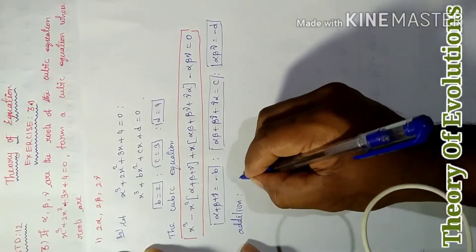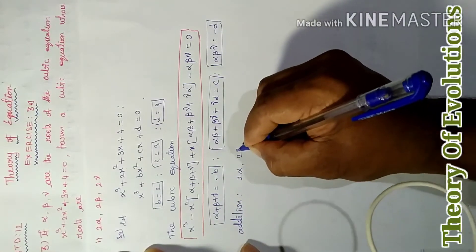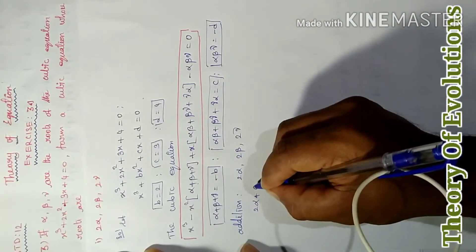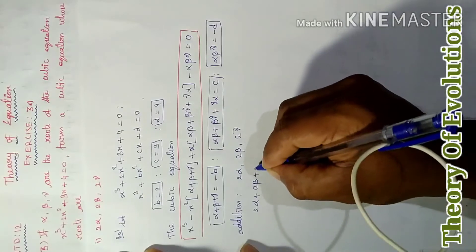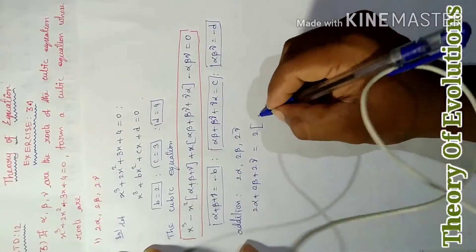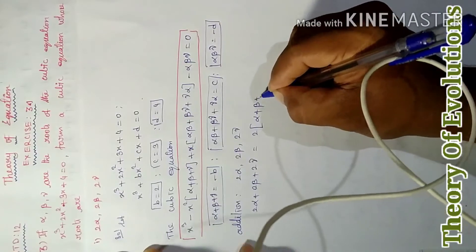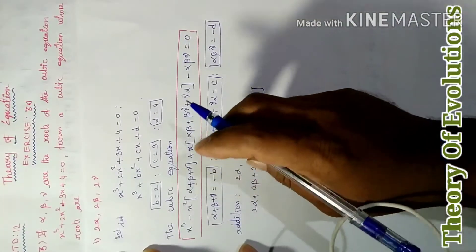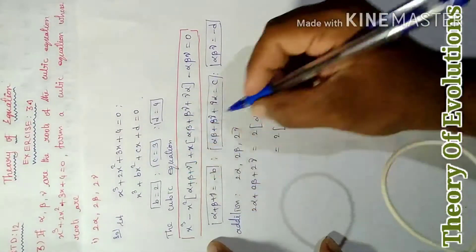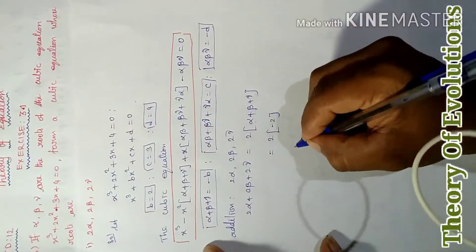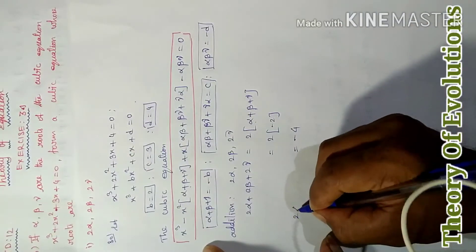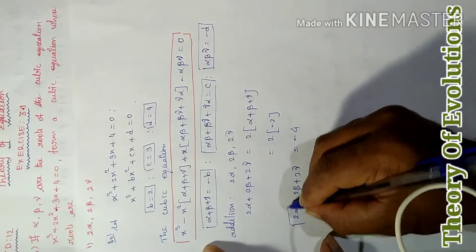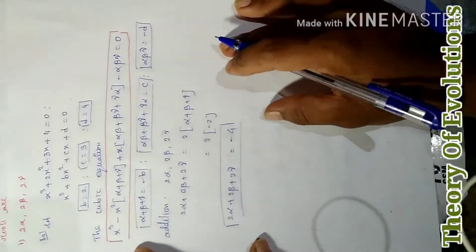Now for the new roots 2α, 2β, 2γ: the sum is 2α + 2β + 2γ = 2(α + β + γ) = 2 × (−2) = −4.